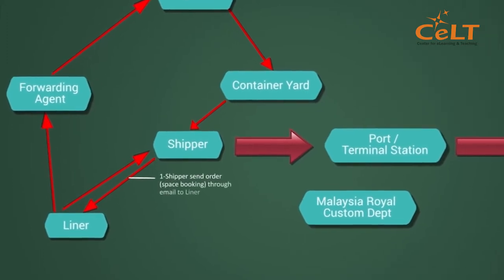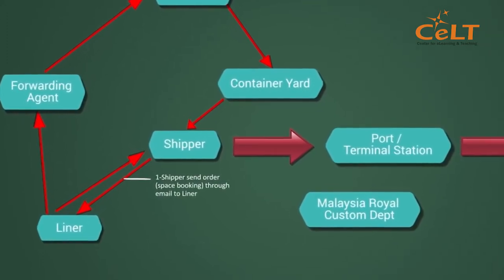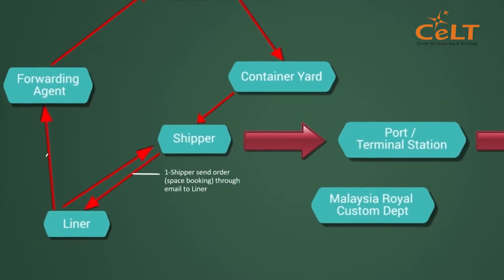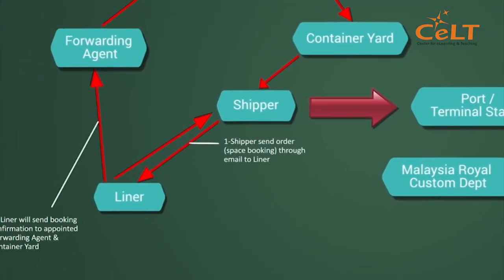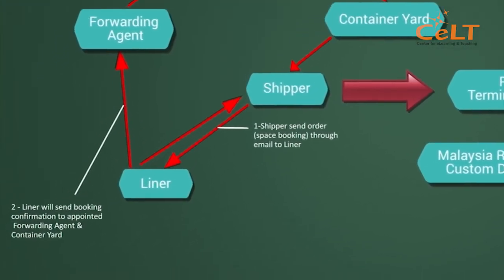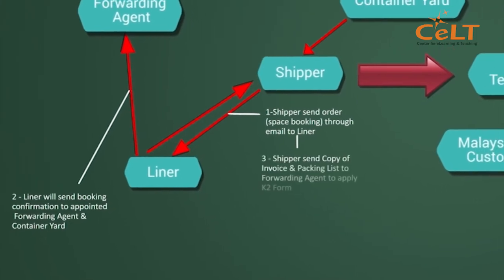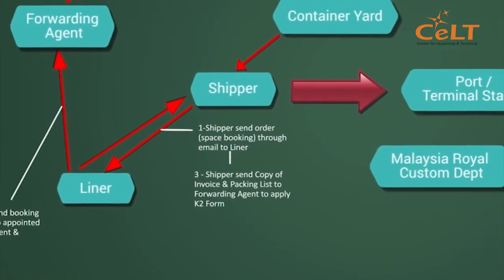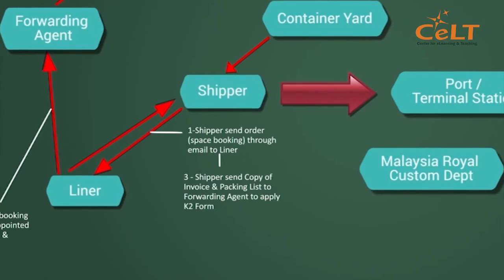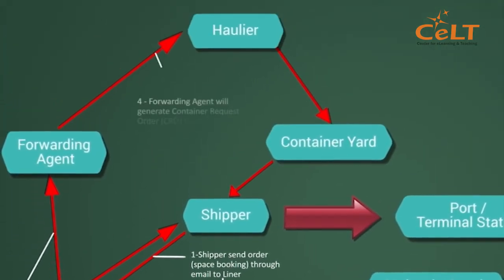Step 1: Shipper sends order or space booking through email to Liner. Step 2: Liner will send booking confirmation to appointed forwarding agent and container yard. Step 3: Shipper sends copy of invoice and packing list to forwarding agent to apply K2 form.